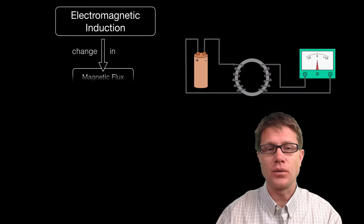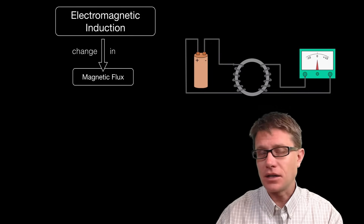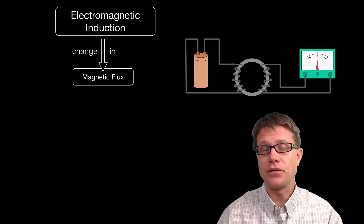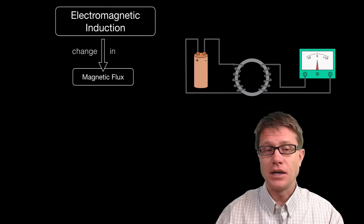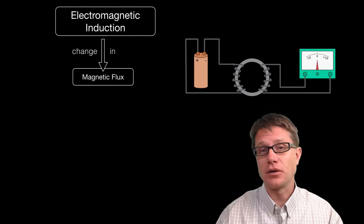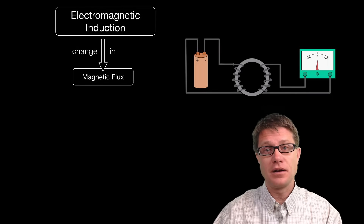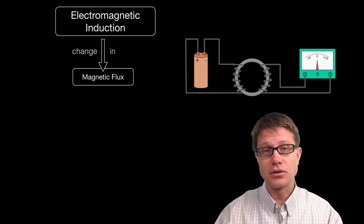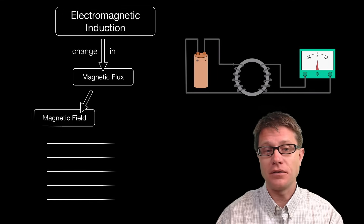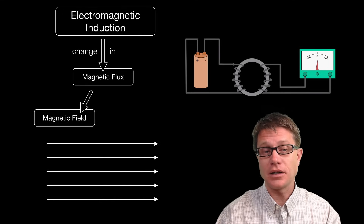Magnetic flux is how a conducting material — or any material for that matter — is affected by a magnetic field. Something similar would be how you or any material on our planet is affected by light from the sun. It is going to be the amount of light from the sun, but it is also going to be the angle at which that light hits. And so magnetic flux is going to be the product of the strength of the magnetic field.